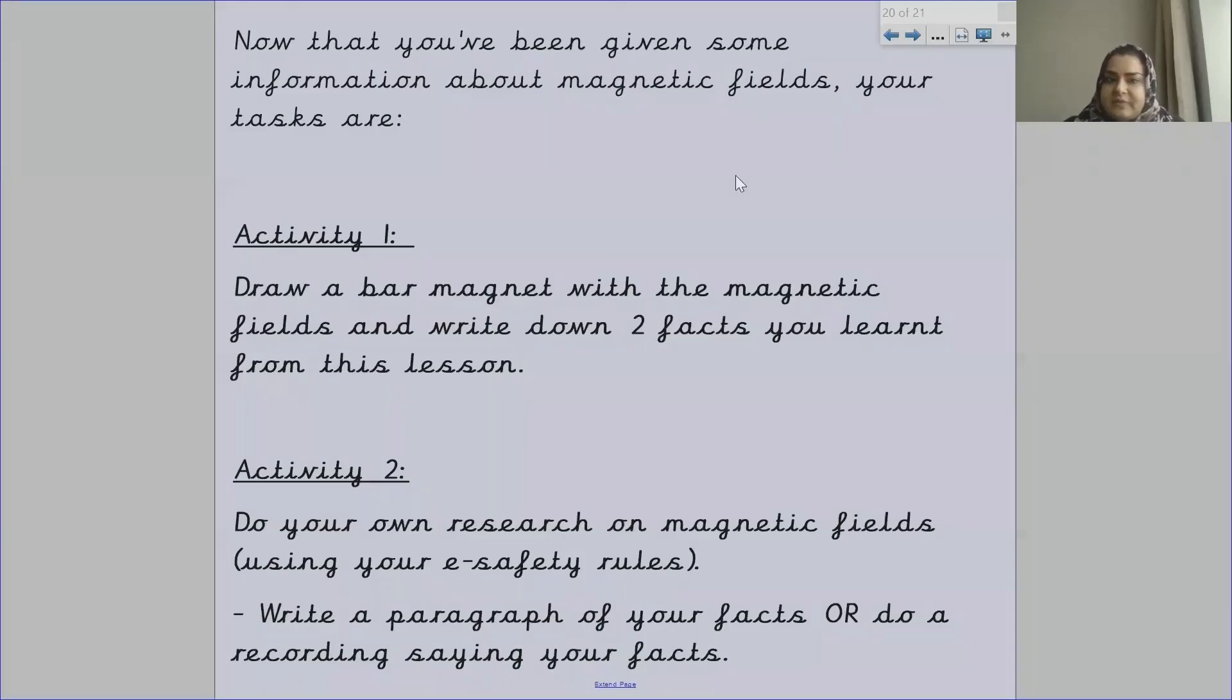Now that you've been given some information about magnetic fields, your tasks are the following. Activity one is draw a bar magnet with the magnetic fields and write down two facts you learned from this lesson. Activity two is do your own research on magnetic fields. Make sure you use your e-safety rules. Then write a paragraph of your facts or do a recording saying your facts.